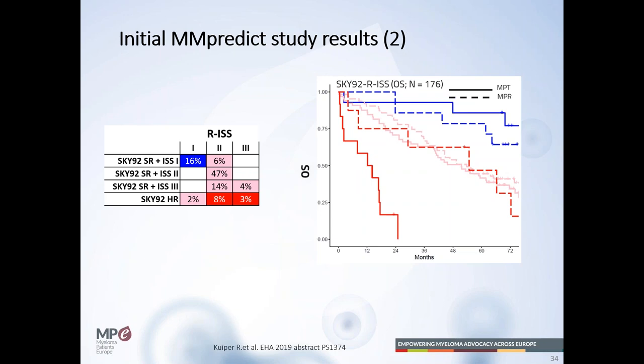Question: are there any differences in the SKY92 results between M component or light chain disease? No, there are no differences between light chain disease and M protein disease.